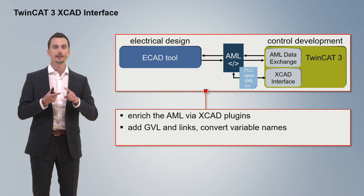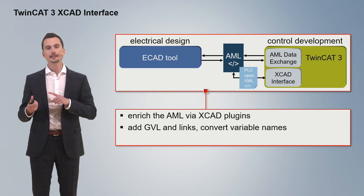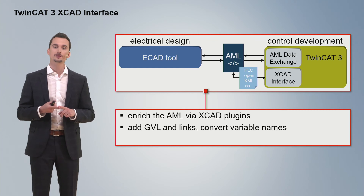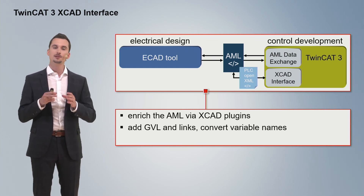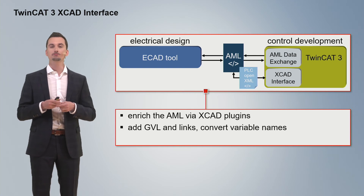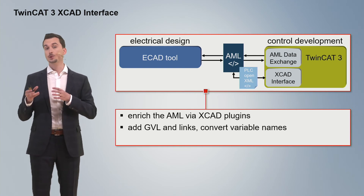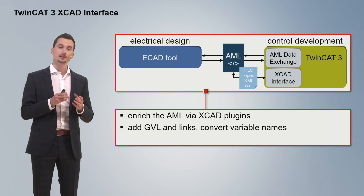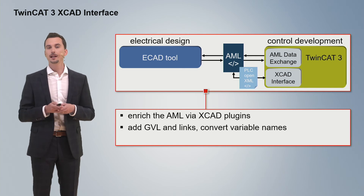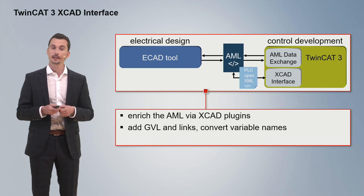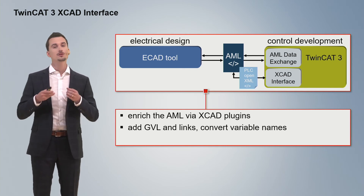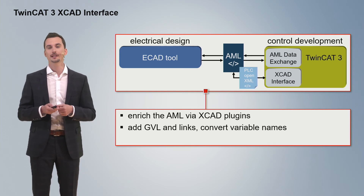This includes a global variable list with variables which are already connected and linked to your IO channels. In addition, as those names for the variables are set automatically on the ECAD tool side, there is a second plugin available which you can use to convert those variable names into valid PLC variable names.